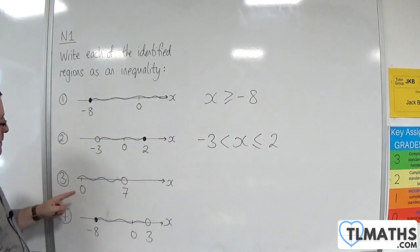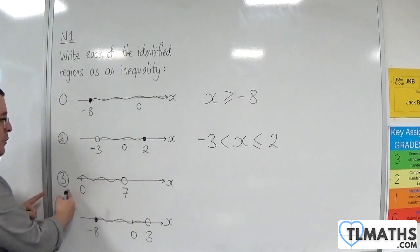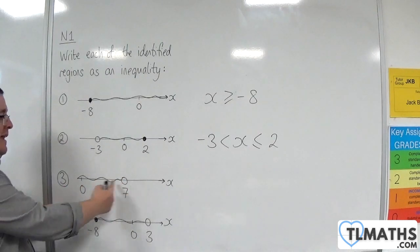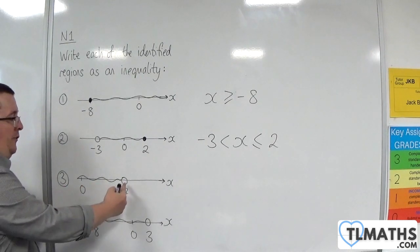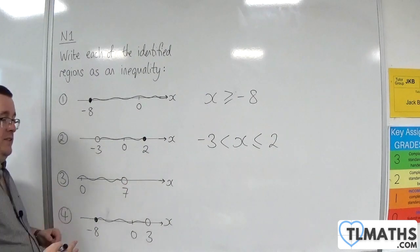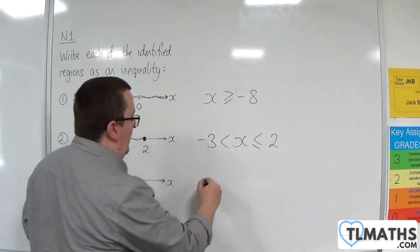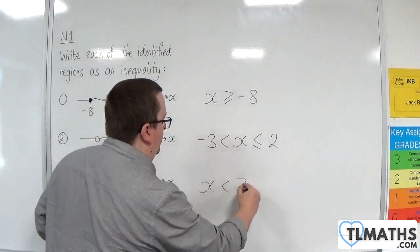For the third one, we're going to the left of 7, so less than 7. And because it's a hollow dot, that's a strict inequality. So x is less than 7.